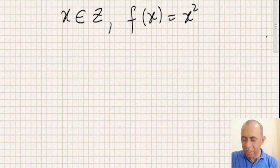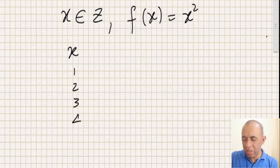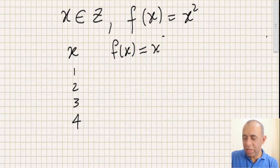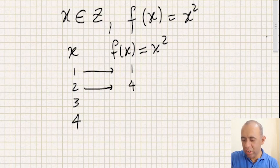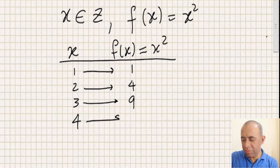For example, say x is only the elements 1, 2, 3, 4. Then f of x, defined as x squared, gives: the square of 1 is 1, the square of 2 is 4, the square of 3 is 9, and the square of 4 is 16.